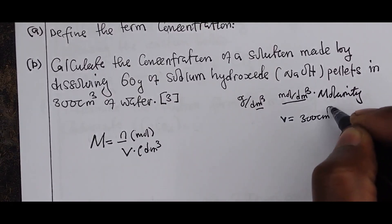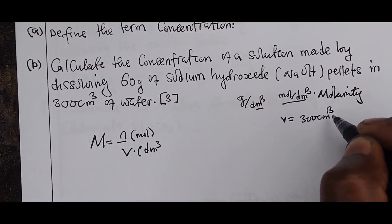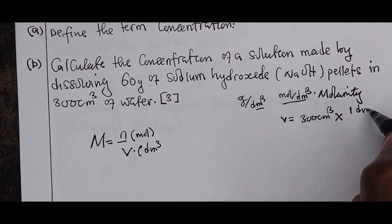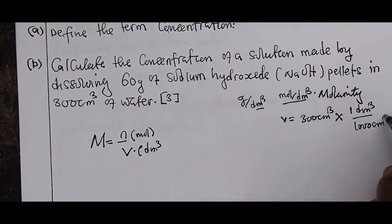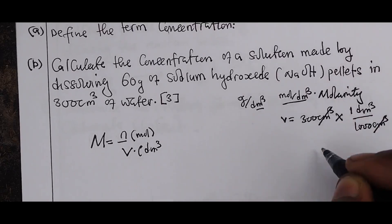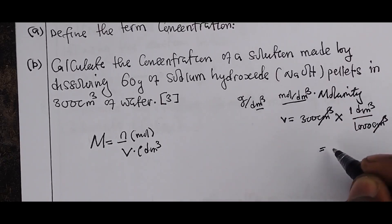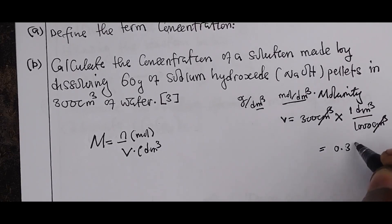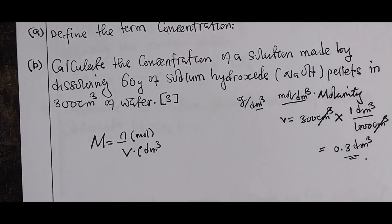Converting 300 cm³ to dm³: one dm³ is equivalent to 1000 cm³, so 300 cm³ equals 0.3 dm³. That is the volume in dm³.